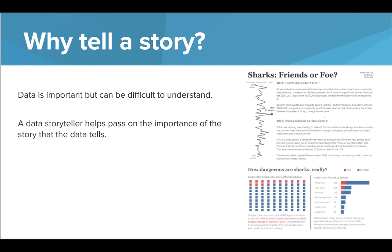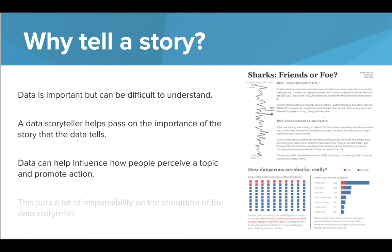We've seen how important data can be and also how difficult it can be to interpret and understand it. Numbers and data need to be put into context for many people to fully comprehend what it's showing. Data can help influence how people perceive a topic and promote action, which puts a lot of responsibility on the shoulders of the data storyteller. In the infographic shown here, the data storyteller has the responsibility of correctly showing data that will either prove that sharks are friends or convince people to stay out of the water and away from sharks.